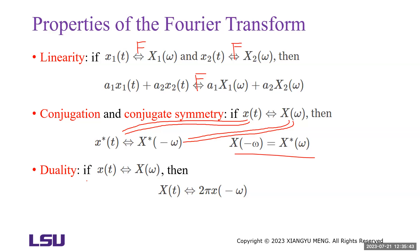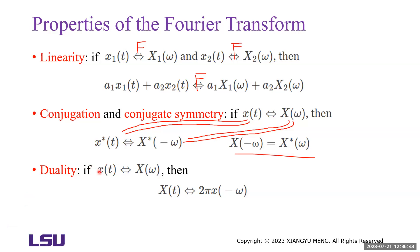The next property is the duality property. If x(t) and X(omega) are a Fourier transform pair, then if we switch the function — considering X(t) in the time domain — we can apply the duality property.